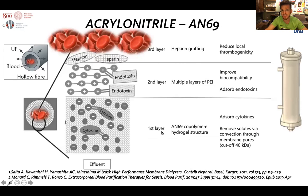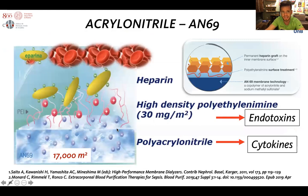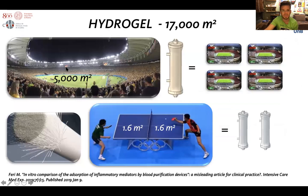One of the filters we can apply in blood purification is the AN-69 polyethylenimine heparin-grafted filter, which has mainly three layers. The outer layer of the hollow fiber has acrylonitrile, which is negatively charged and has properties to absorb cytokines. The middle layer is from polyethylenimine, which is positively charged and has properties to absorb endotoxin. Finally, the inner layer has a heparin graft that reduces the chance of clotting. What is interesting is that the hydrogel area for adsorption has an estimated area of 17,000 square meters — equivalent to five Maracanã stadiums.